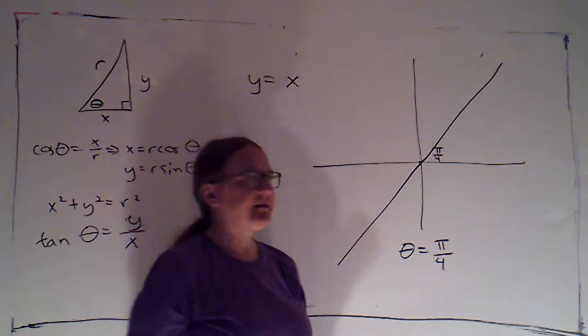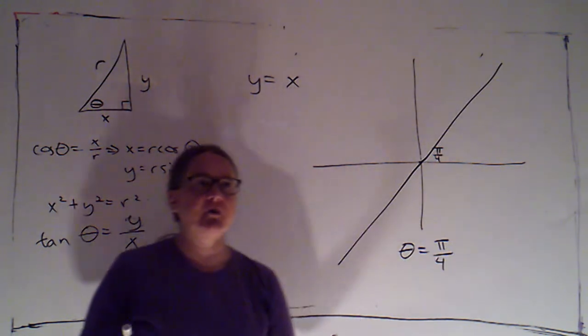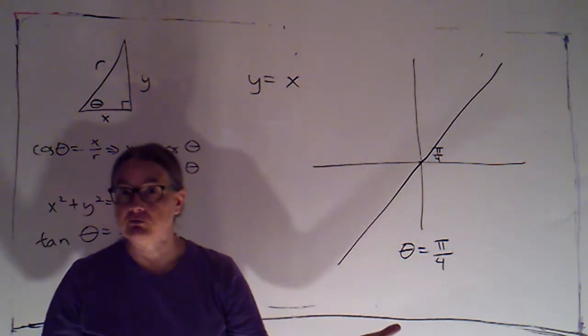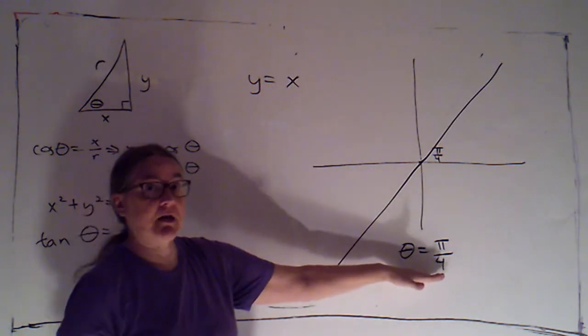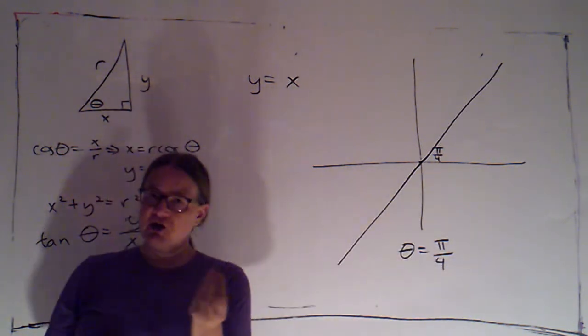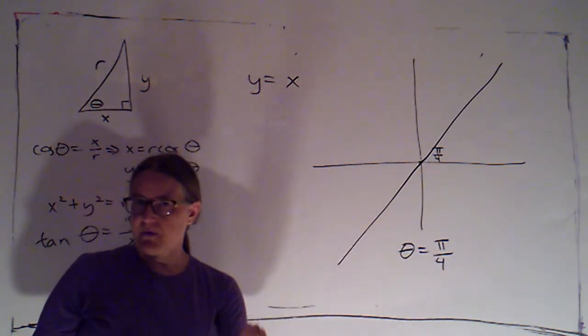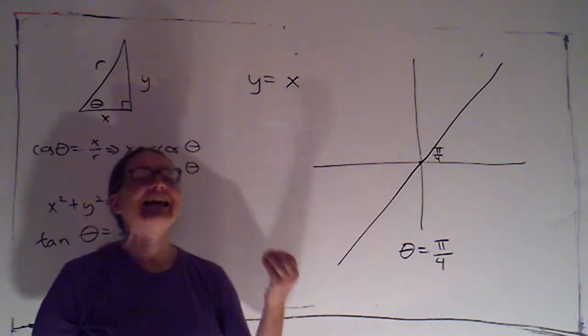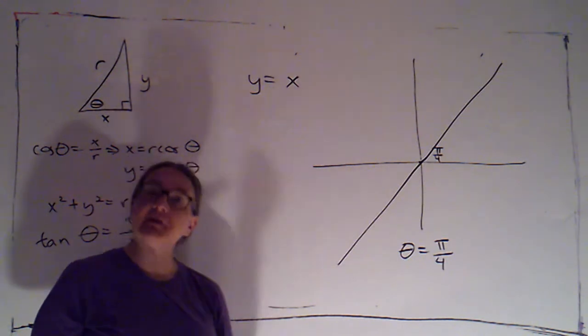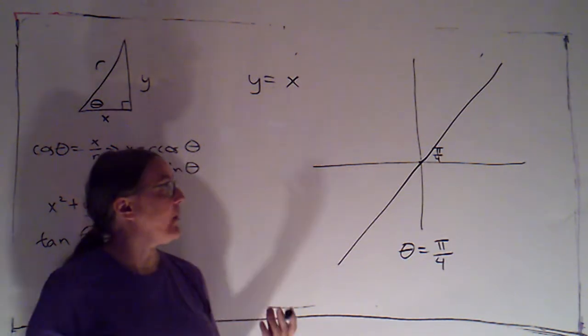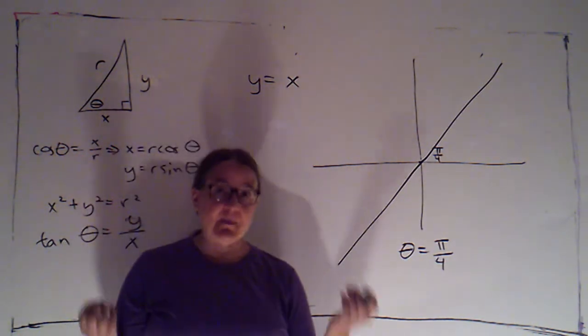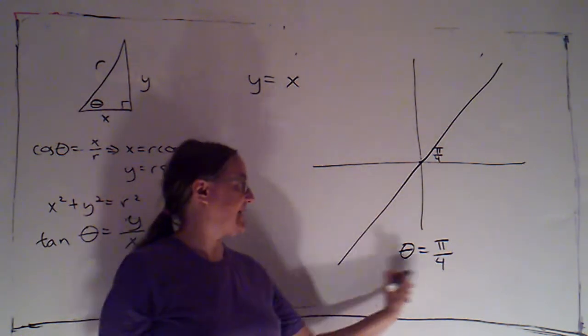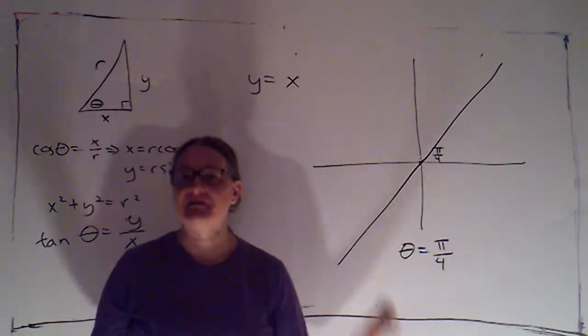But I could look at the origin, and I could say r is 0, theta could be pi over 2. That would not make this true. So the origin has more than one name. One name makes the equation true. Other names are going to make it false. It's still on the graph.